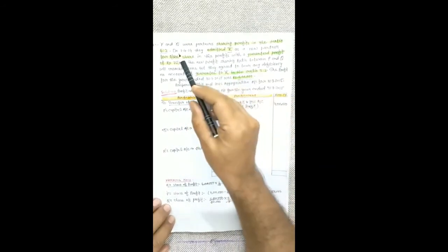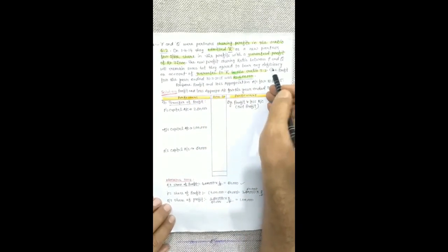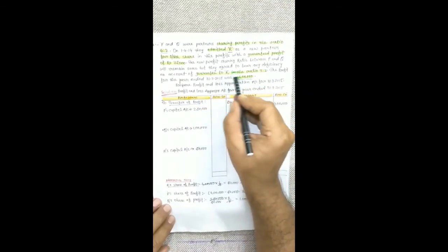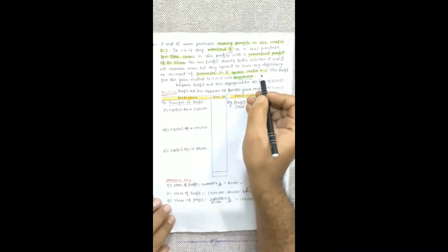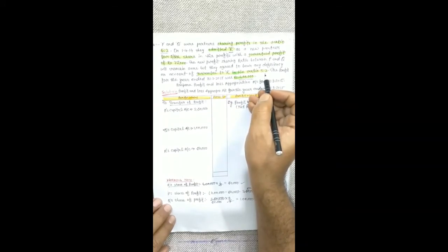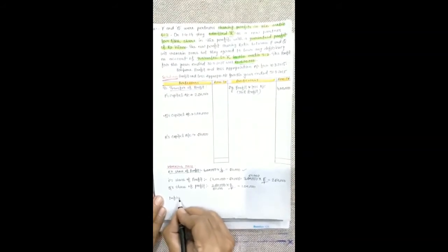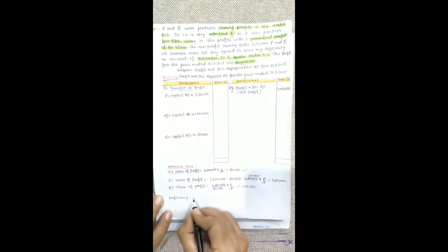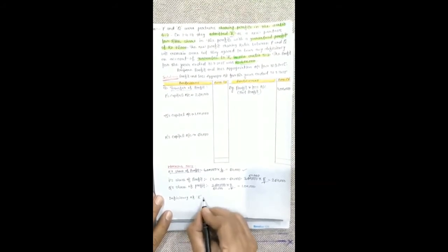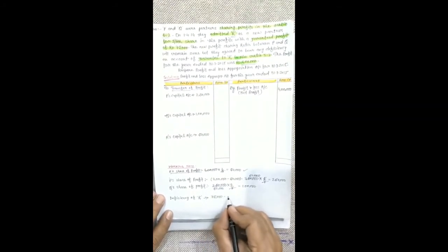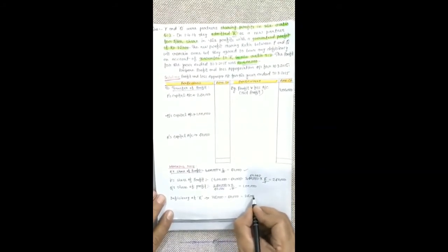P and Q guaranteed R a profit of Rs. 75,000. If there is any deficiency, they will provide it in the ratio of 3:2. We calculate the deficiency: Guaranteed amount is Rs. 75,000, R is only getting Rs. 50,000, so the deficiency is Rs. 25,000. This Rs. 25,000 must be borne by P and Q in the ratio 3:2.